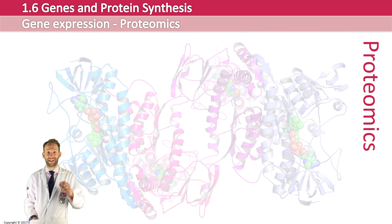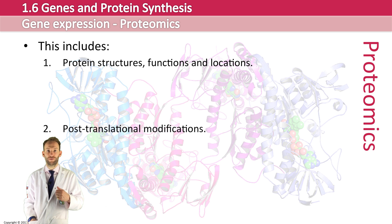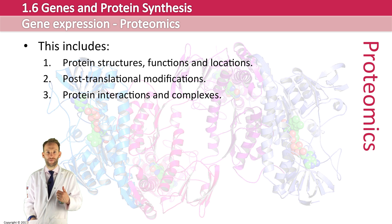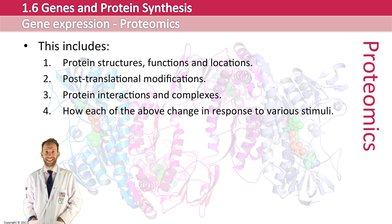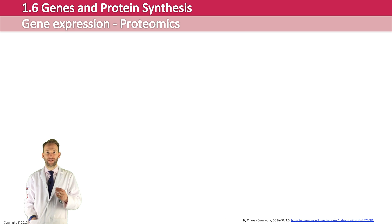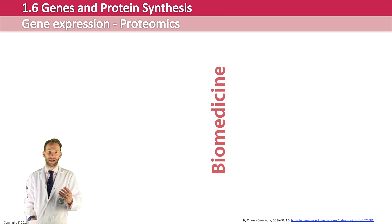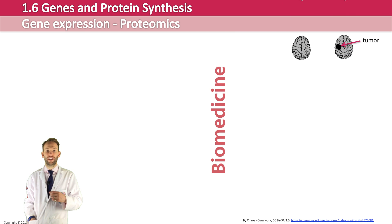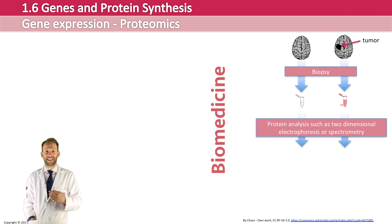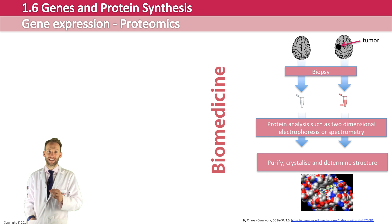Therefore, a lot of researchers are now studying proteomics. This includes protein structures, functions and locations, post-translational modifications, protein interactions and complexes, and how each of the above responds to various stimuli. One of the biggest applications of proteomics is in biomedicine. If we can work out what sort of proteins are present in a cell or tissue, it can tell us a lot about it. The most prominent disease being studied with proteomic approaches is cancer — they are being used to improve screening and early detection. If specific biomarkers are present in diseased tissue, then drugs are designed to alter protein function.